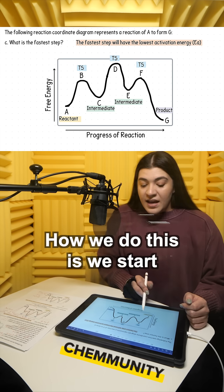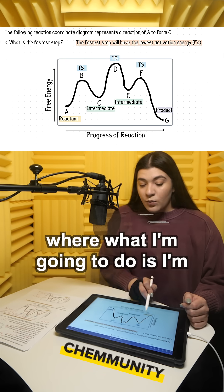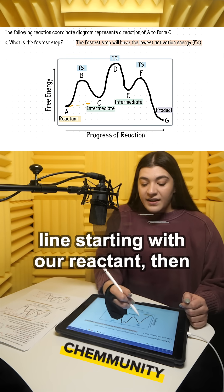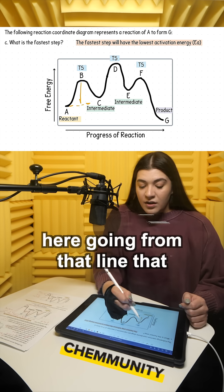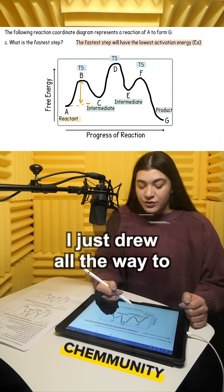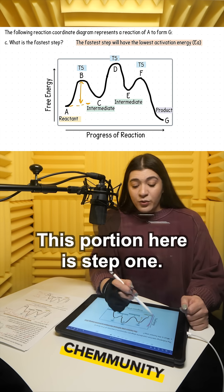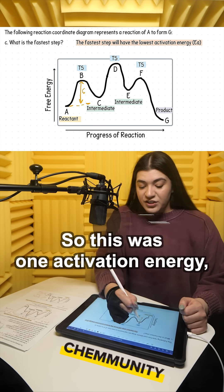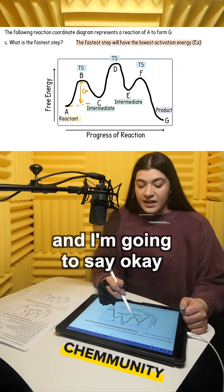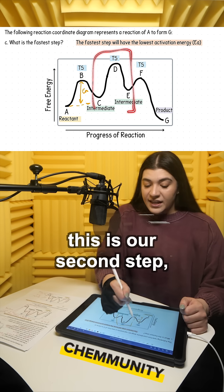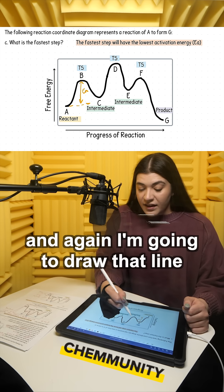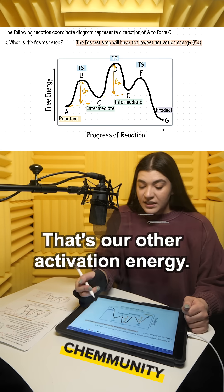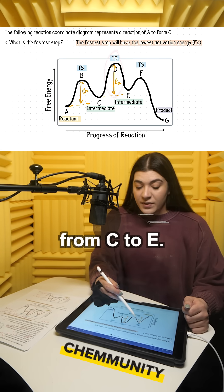How we do this is we start from left to right. I'm gonna draw a dashed line starting with our reactant, then place an arrow going from that line all the way to the transition state. This portion here is step one — this is converting A to C. So this was one activation energy. Then I'm gonna keep going: now I'm going from C to E. This is our second step, and I'm gonna draw that line and place an arrow going as high as that transition state. That's our other activation energy — the energy required to go from C to E.